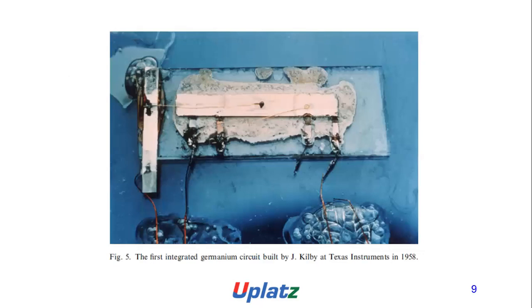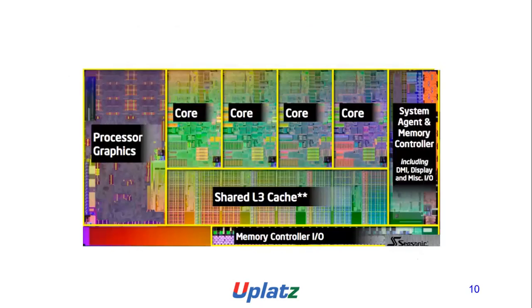Here is the first integrated Germanium circuit by Jack Kilby at Texas Instruments in 1958. Here is an AMD processor graphics processor chip layout, consisting of a shared L3 cache, processor graphics, system engine, memory controller, DMI, display and buses, and I/O.